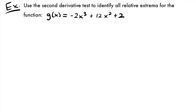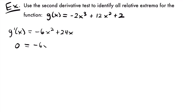Let's look at another example. We want to use the second derivative test to identify the relative extrema of g(x) = -2x³ + 12x² + 2. Let's start by taking the first derivative: g'(x) = -6x² + 24x. The derivative of the constant 2 is 0, and the remaining terms came from applying the power rule.